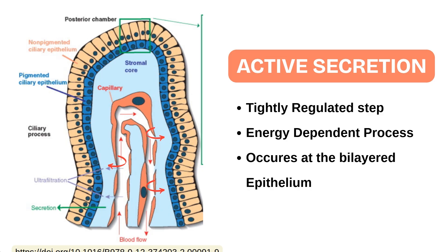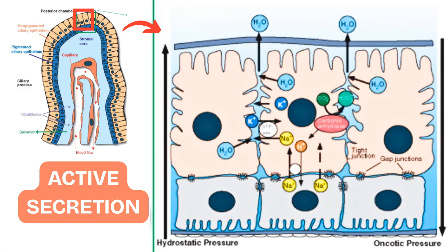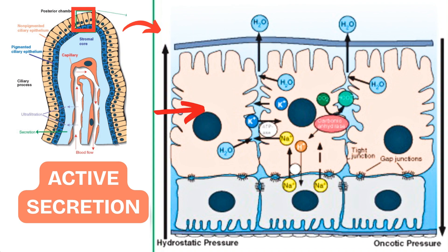Active secretion is a tightly regulated and energy-dependent process responsible for about 80% of aqueous humor production. This occurs at the bilayered epithelium of the ciliary processes, which consists of an outer pigmented epithelium and an inner non-pigmented epithelium.